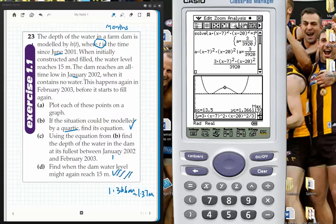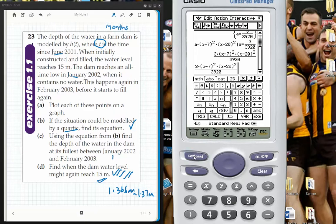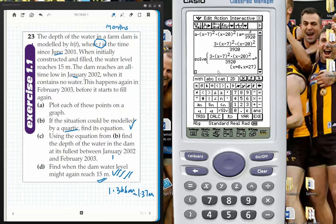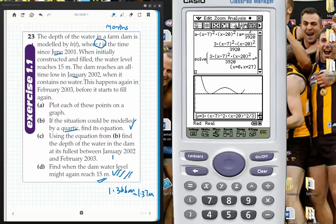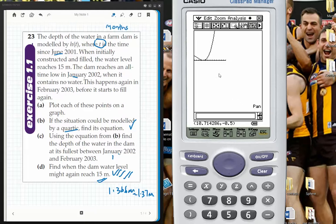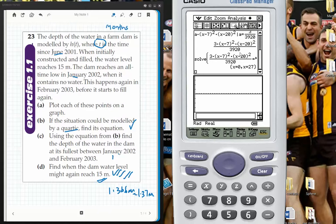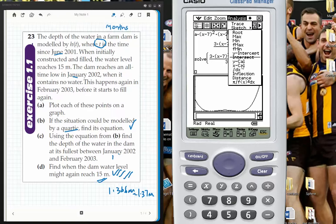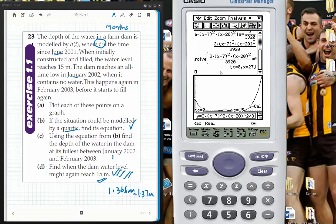When will the dam level reach 15 again? Well, it's going to get to 15 again up here somewhere. I can say when does that equal 15 and solve for x: 0 and 27. I could resize my graph. So bring up my graph again, zoom auto. Analysis, G-Solve, x-calc for when y equals 15. That gives me my first one.